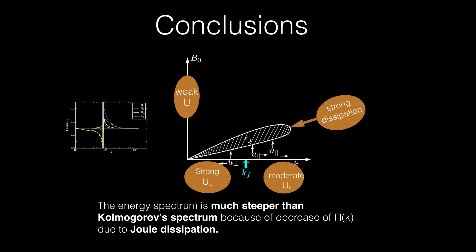Another important point is that energy spectrum in QS MHD is much steeper than Kolmogorov spectrum, and that is because of decrease in flux due to Joule dissipation. So this is what we describe in our review, past work and recent works. Thank you.